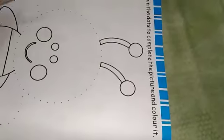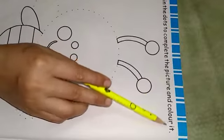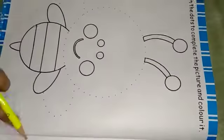What do we need to do? Join the dots to complete the picture and color it. Okay? This is our butterfly.